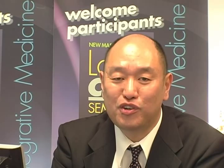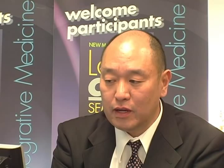Let's look at sha san huang — the three points on the spleen channel. The first is xin guan, which is 1.5 cun below Spleen 9, also called tian huang fu in Master Dong's terminology. There's also di huang, which is 4 cun above Spleen 6. And finally, ren huang, which is actually the TCM Spleen 6. All of these points are along the medial border of the tibia — very close to the bone, not in the middle where you'd find them in TCM.